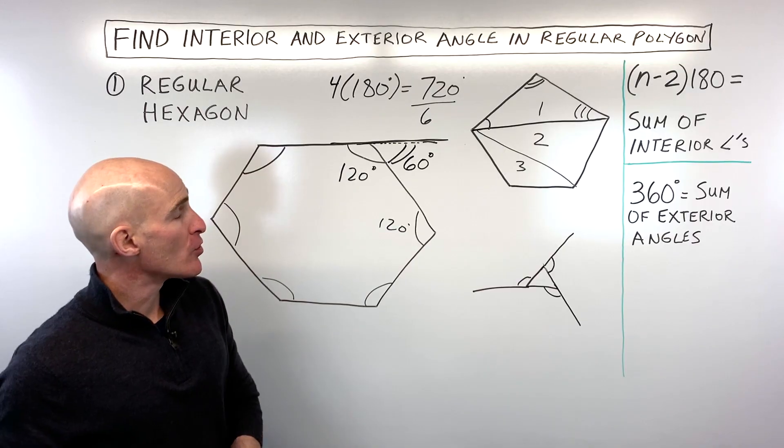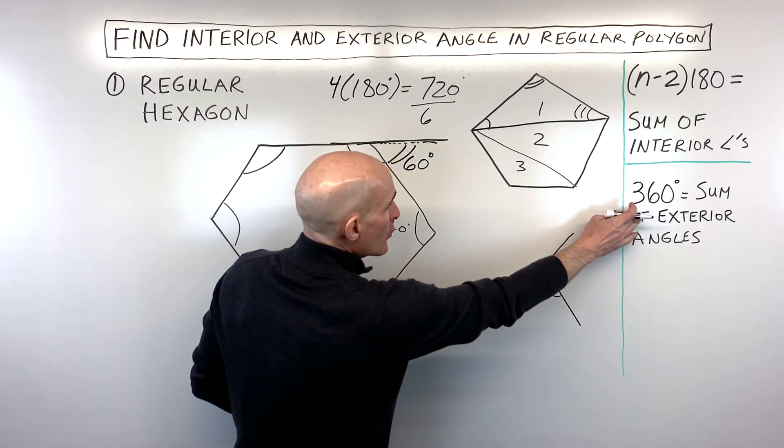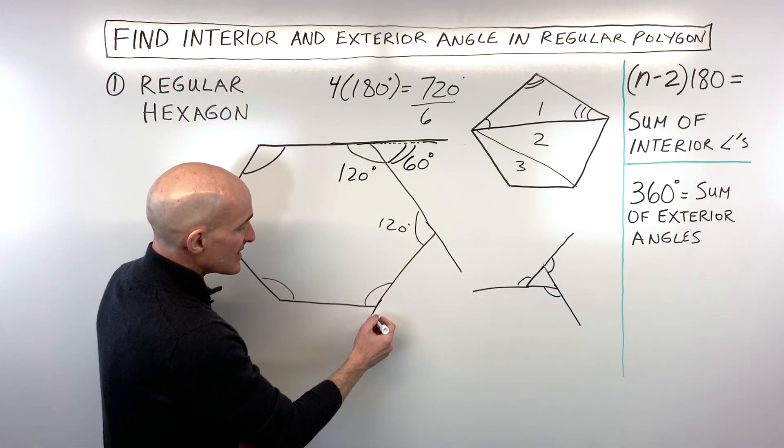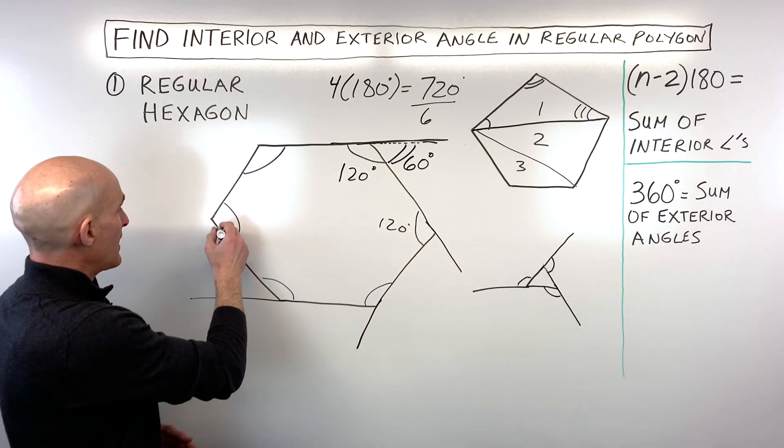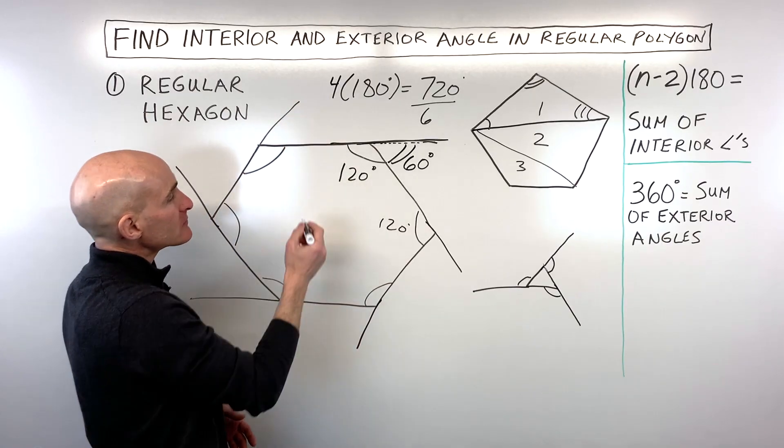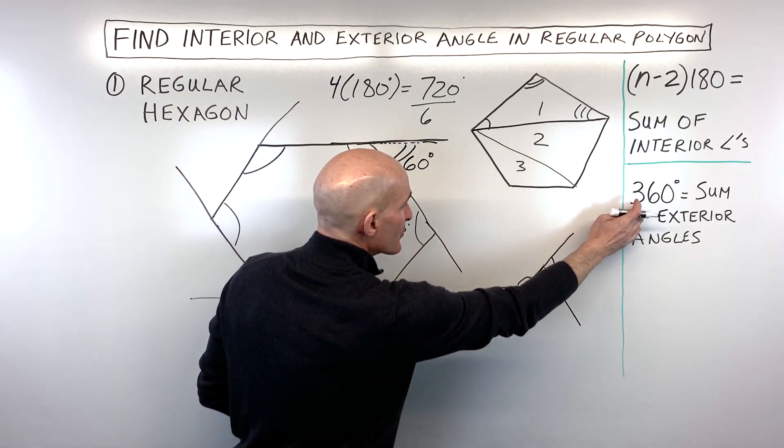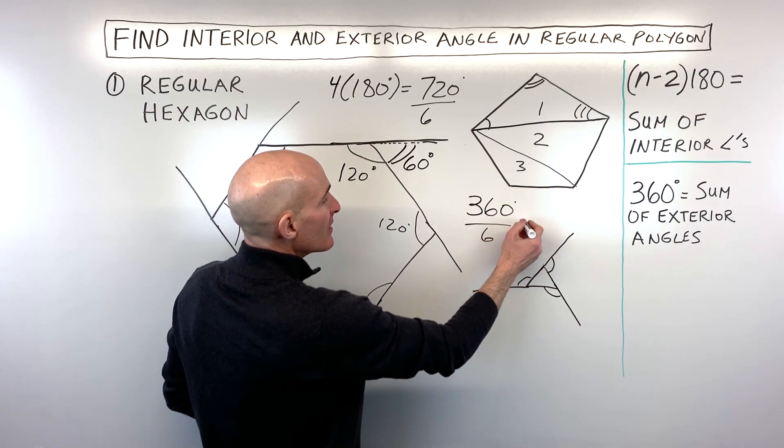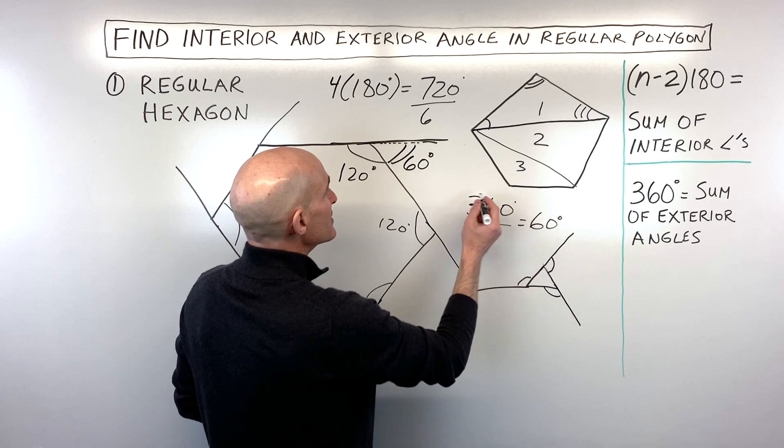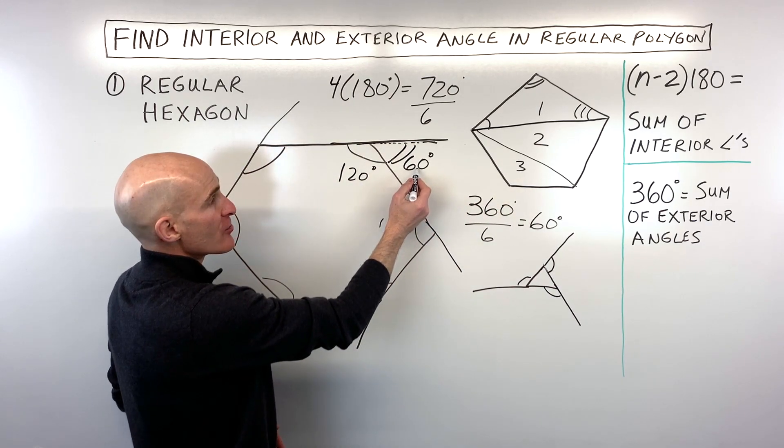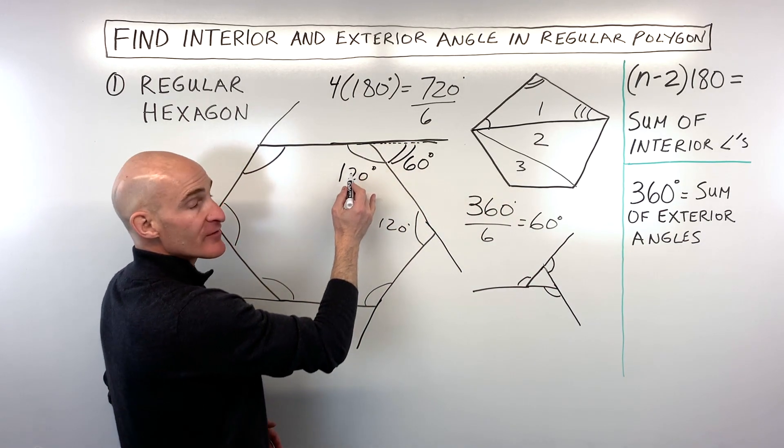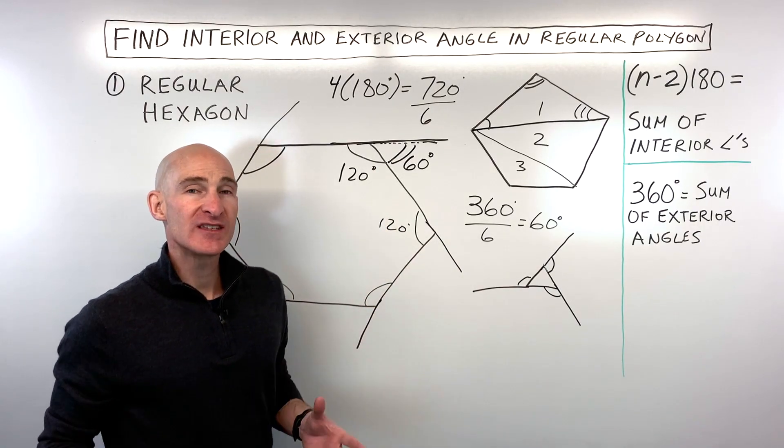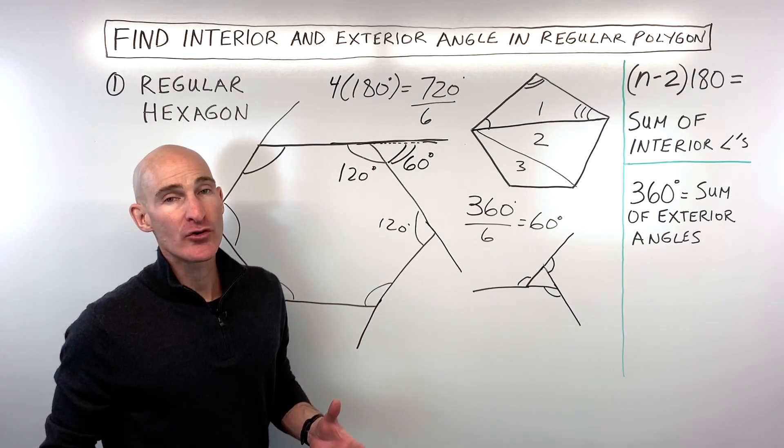Now, another way that you could approach this is that you could say, I know that all the exterior angles add up to 360 degrees. So if I was to extend one of the sides at each vertex of this hexagon, I could say, well, they all add up to 360. So if I just take 360 degrees divided by six, that comes out to 60 degrees. And then once I have that exterior angle, I can then just subtract from 180 to find the interior angle. Again, keep in mind, this is just for regular polygons where all the sides are congruent, all the angles are congruent.